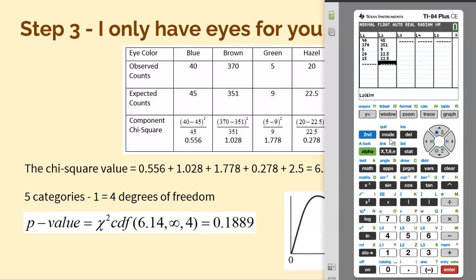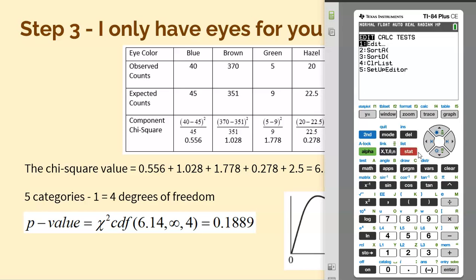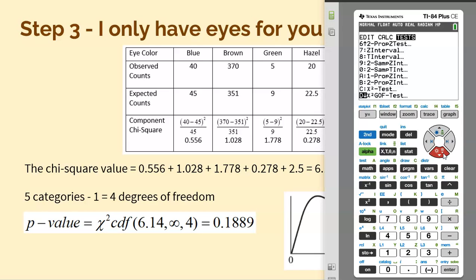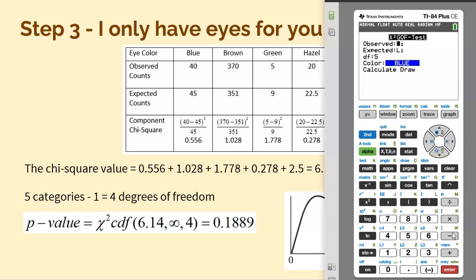To get your chi-squared and your p-value, hit stat, slide over to tests. Go way down the list and you will literally see chi-squared — that little symbol for chi, the Greek letter — and you'll see G-O-F, which stands for goodness-of-fit test. When you select this, it's going to ask where is your observed data and where's your expected data. List one is where I put my observed data, so if it doesn't say L1, just hit second, number one, and it'll pop up. The expected data was in list two.